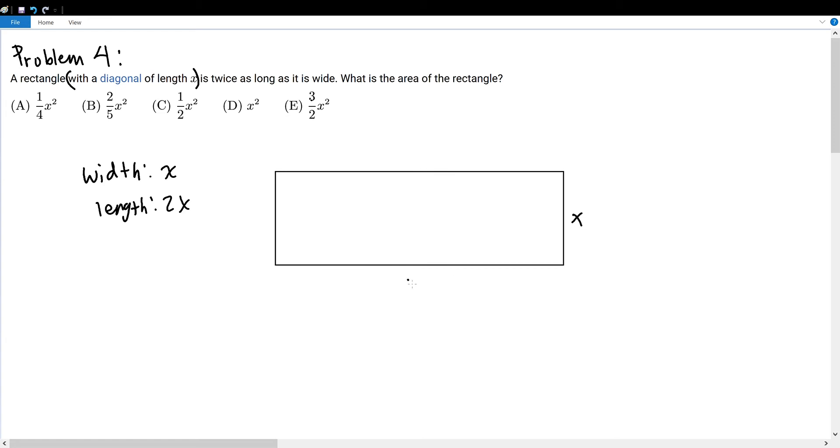Our width is x and our length is 2x. We know that the diagonal is twice as long as it is wide, so I let the width be x. That was a mistake on my part. Instead of x, let's let the diagonal be equal to y.